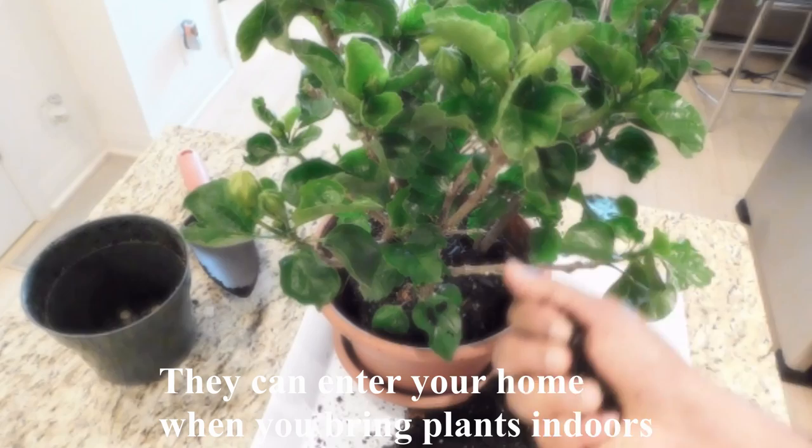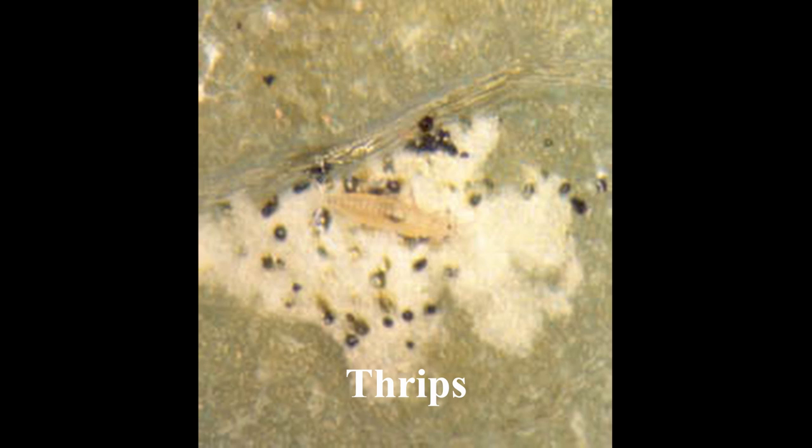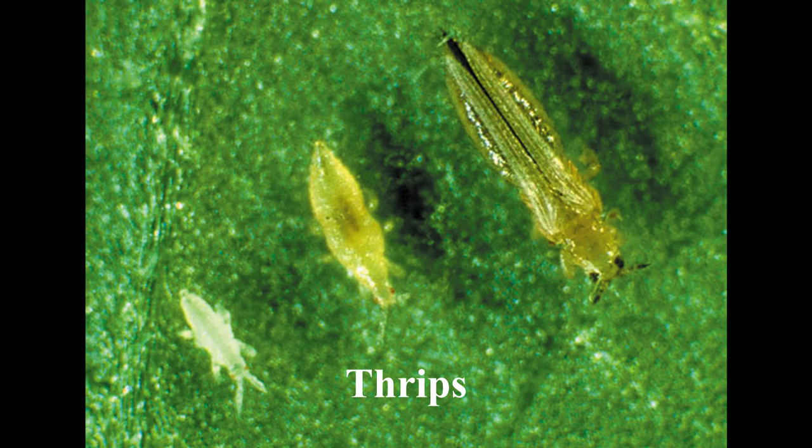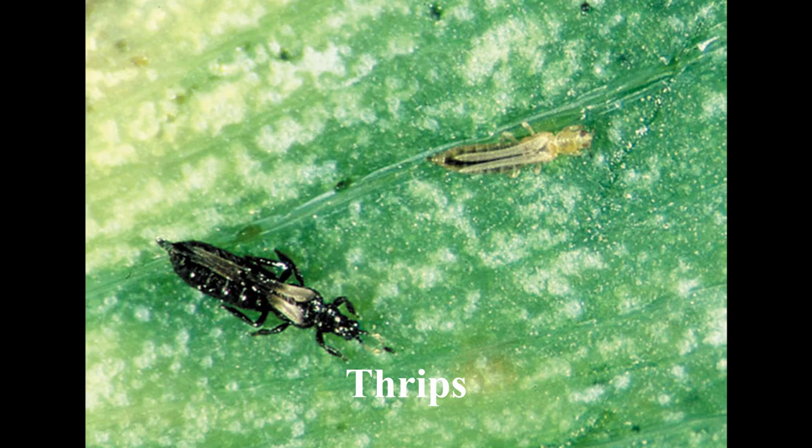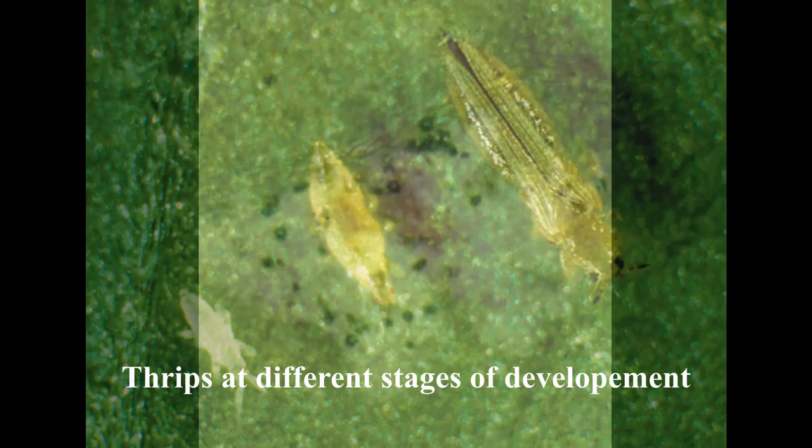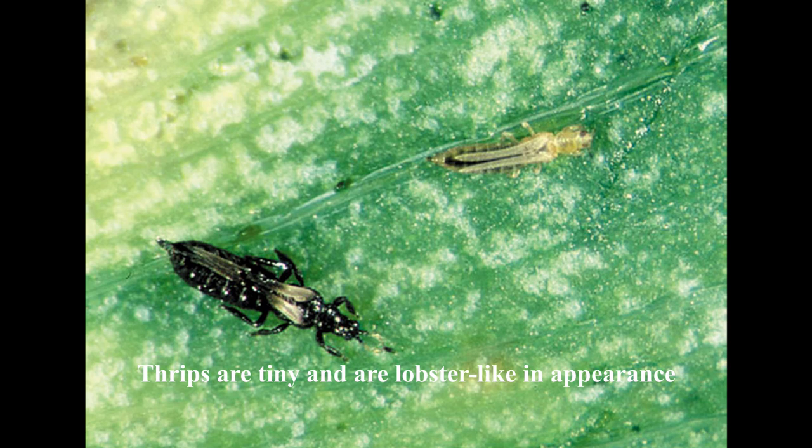Thrips are an insect pest that damages the leaf surface. They are commonly found in greenhouses but can also attack houseplants. They are tiny and slender and range in color from yellow to brown or black. When disturbed, they leap or fly away, which makes them harder to control. You can identify them by shaking an infected plant over a white background and you will see them more easily — they look like minute lobsters. To control their population, use yellow sticky traps similar to the ones used for fungus gnats.